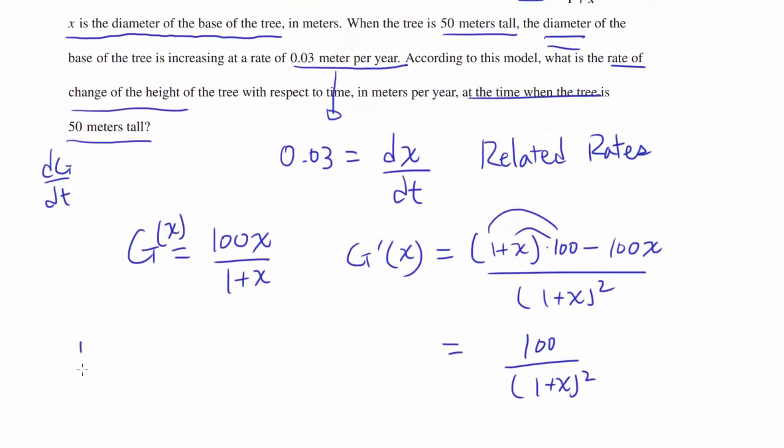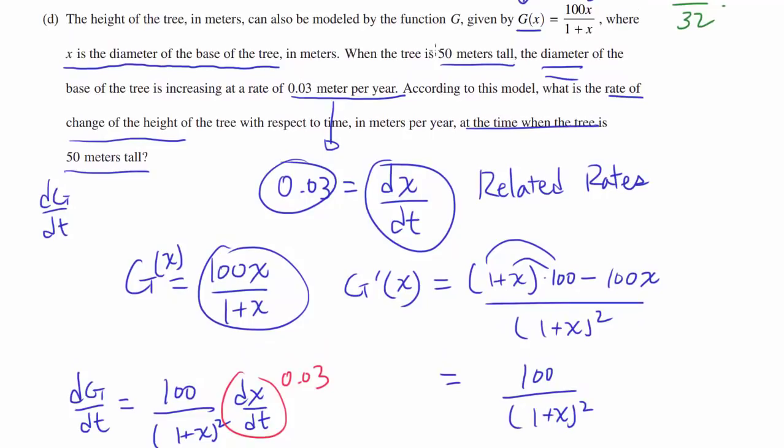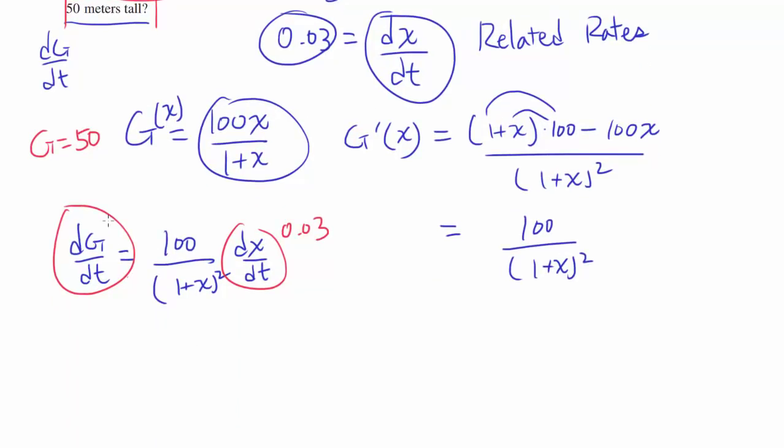So what do we know? dG/dt is going to be differentiating this. So 100/(1+x)^2 · dx/dt using the related rate. We know dx/dt, that's 0.03. And what else do you know? You know the tree is 50 meters tall. So we know G = 50. And we wish to find the rate of change of the height, so we want to find dG/dt. To find dG/dt, we have to find x.